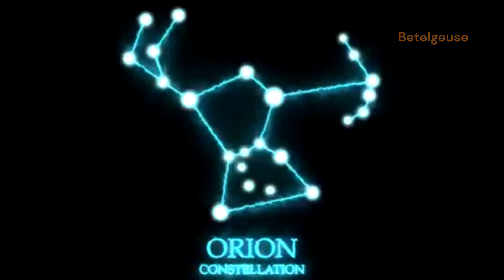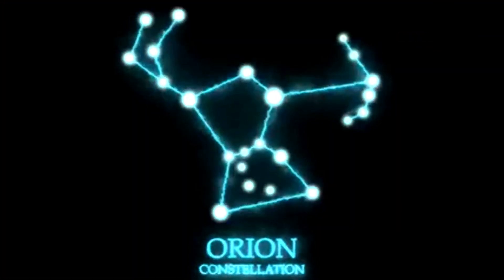Look up at the night sky, and you might see a constellation called Orion. This constellation has been known and observed by humans for thousands of years, and it holds a special place in many cultures and mythologies.